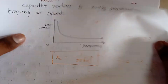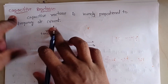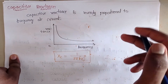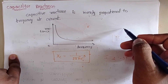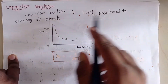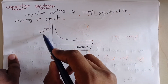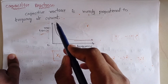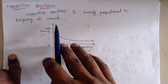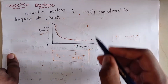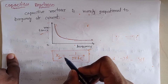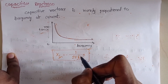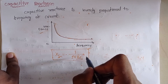Capacitive reactance is inversely proportional to the frequency of the current — unlike inductive reactance which is directly proportional to frequency. When frequency increases, capacitive reactance decreases. Capacitive reactance is denoted by XC, and it is calculated using the formula XC = 1 / (2πFC), where F is the frequency of the current and C is the capacitance of the capacitor.